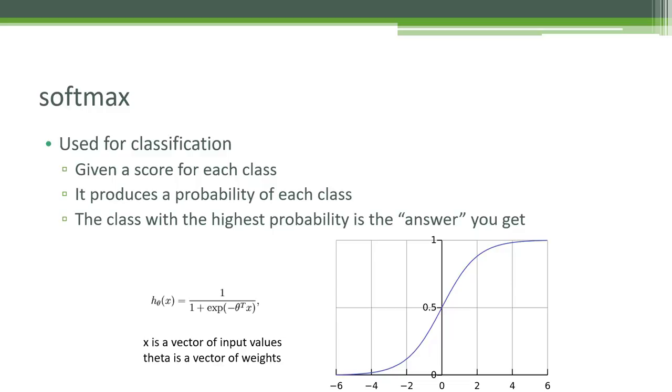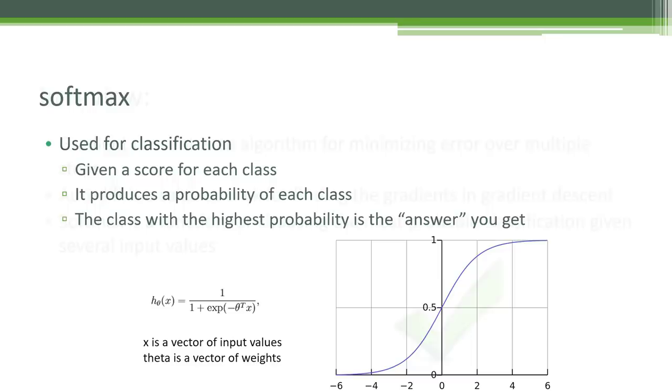So again, just to recap, gradient descent, an algorithm for minimizing error over multiple steps. Basically, we start at some random set of parameters, measure the error, move those parameters in a given direction, see if that results in more error or less error, and just try to move in the direction of minimizing error until we find the actual bottom of the curve there, where we have a set of parameters that minimizes the error of whatever it is you're trying to do.